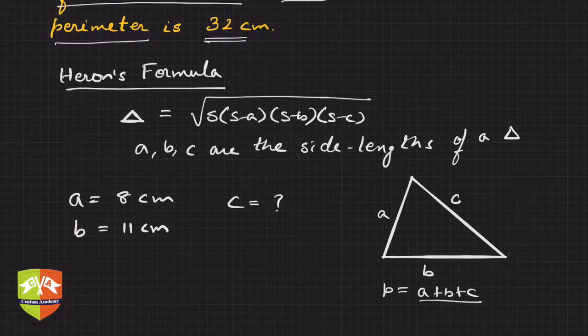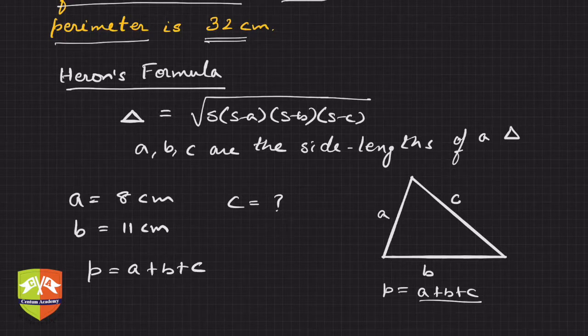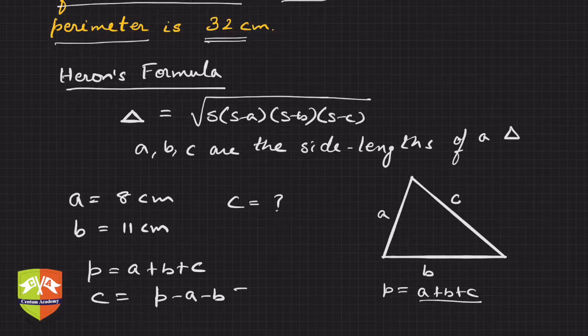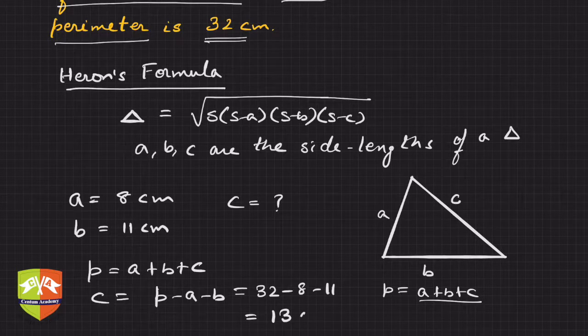Hence from this information you can find out c. So that means p equals a plus b plus c. Hence c equals p minus a minus b, which equals 32 minus 8 minus 11, which equals 13 centimeter. So the third side is now known to us.